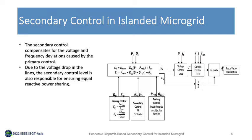The overall control system of grid-forming units is shown in the figure, where the secondary controller acts to restore frequency and voltage deviations caused by the primary control level, operating in a larger time step to avoid interaction during primary control transients. In addition, due to voltage drop in the lines, the secondary control is also responsible for reactive power sharing between units.